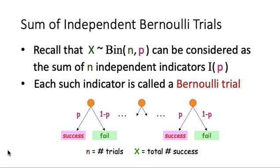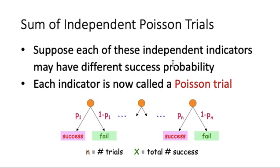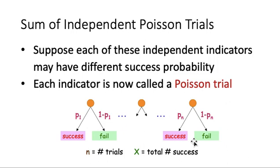If we make a generalization, this time we again have N trials, but for each trial the success probability can be different. For instance, the first trial succeeds with probability p1, the second with probability p2, and so on. All these trials — all these coin flips — are independent of each other. If we count the total number of successful trials, this is the sum of independent Poisson trials, and each individual trial is called a Poisson trial.